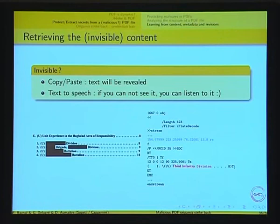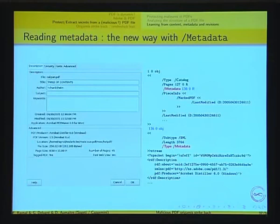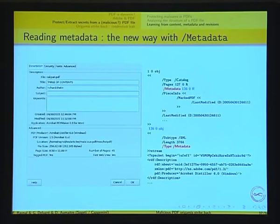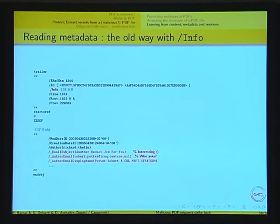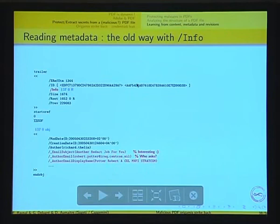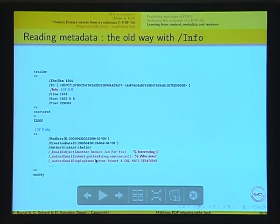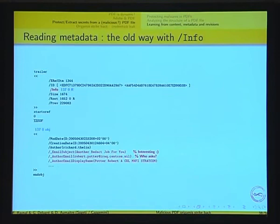Another interesting thing for crime investigation is getting information about dates and who wrote the PDF. In Acrobat Reader, you can view file properties — everything you see in the properties dialog is also available in the PDF language. There's a newer metadata approach and an older slash info field. Looking at the Calipari document's info field, we find this report was asked to be written by Robert Potter when he sent an email to Richard Tellin saying: hey, here's another Red Hat job for you. This kind of information can be quite useful.